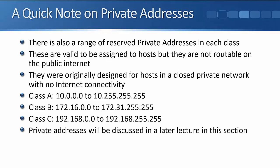A quick note on private addresses now. I gave you all the addresses available in our class A, B, and C networks, and we spoke about the reserved addresses for our loopbacks. The addresses beginning with 0 are reserved as well. There's also a range of reserved private addresses in each class. Those are valid to be assigned to hosts, unlike the other reserved addresses, but the difference is that these are not routable on the public internet. They were originally designed for hosts in a closed private network that should have no internet connectivity.